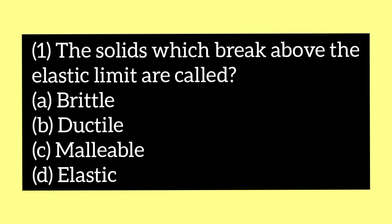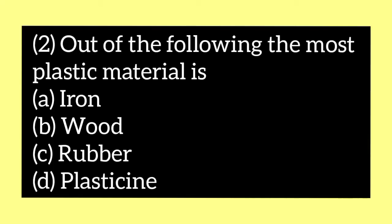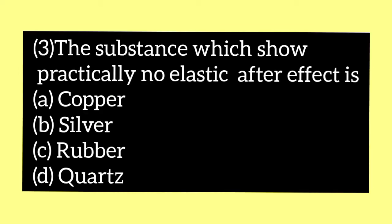Moving on to the second question: out of the following, the most plastic material is — option A iron, option B wood, option C rubber, and option D plasticine. The correct answer is option D, plasticine.